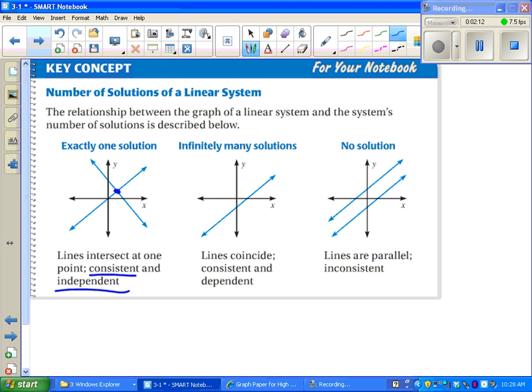Sometimes you graph two lines and they're the exact same line on top of each other. We say that's consistent because there is a solution. We say dependent because there's an infinite number of solutions.